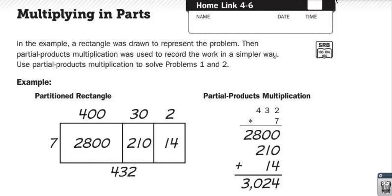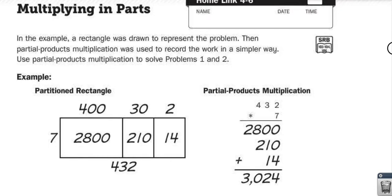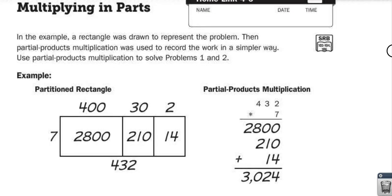For Homelinks 4-6, we're multiplying in parts, so we're taking what we talked about with the partitioned rectangles and we're kind of skipping the rectangle part and just doing partial products.